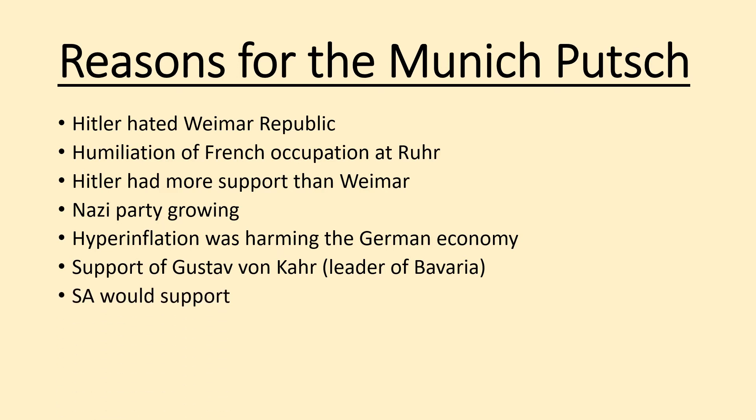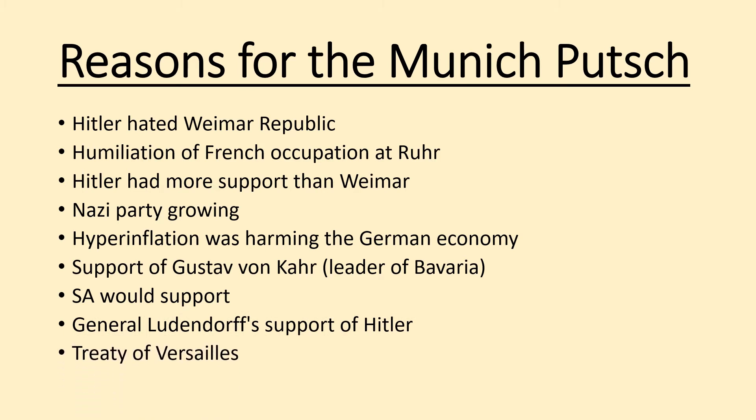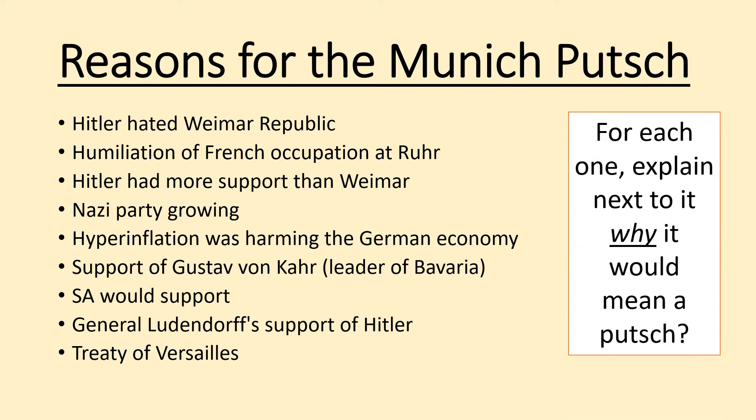He knew the SA — his private army — would support him. General Ludendorff also supported Hitler. And the Treaty of Versailles was generally hated by everyone. You need to note these reasons down and explain why each one would lead to a Putsch — why it would lead to Hitler trying to overthrow the government.